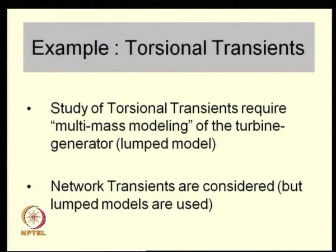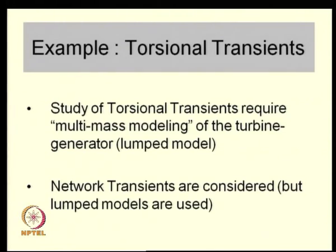That is the last part of the course on stability improvement. Just to recap, torsional transients require multi-mass modeling. Whenever we are studying torsional transients, the speed of all the turbines and the generator is not the same. Though in steady state they are the same, the transient differences in speed are usually caused by torsional oscillations.